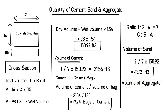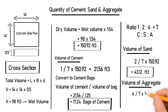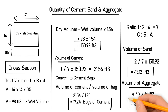Let's find the volume of aggregate. In the ratio, aggregate is 4 divided by the total ratio 7, multiplied by the dry volume of 150.92, giving an aggregate volume of 86.24 cubic feet. That's it — we have calculated the volume of cement, the number of cement bags required, and the volumes of sand and aggregate.